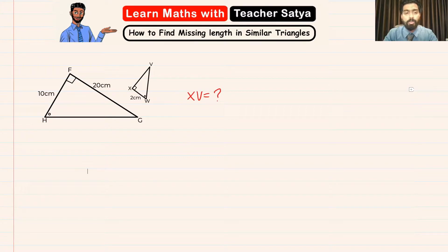In these two triangles they are telling us to find the length of XV. Step number one, we are going to name the triangles. The reason we are going to name the triangles is so that we can find their matching sides.